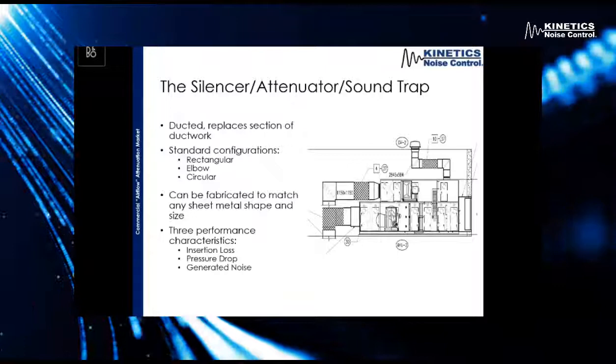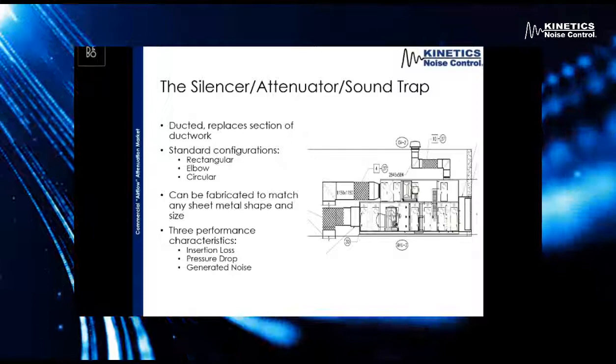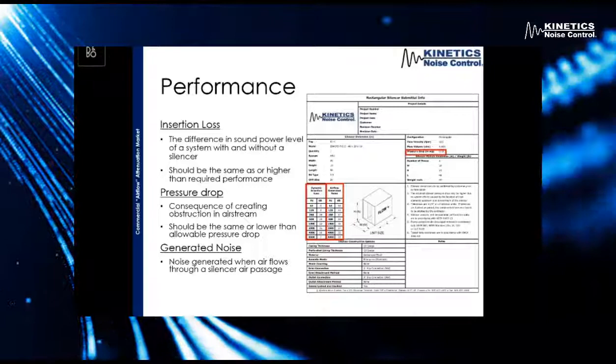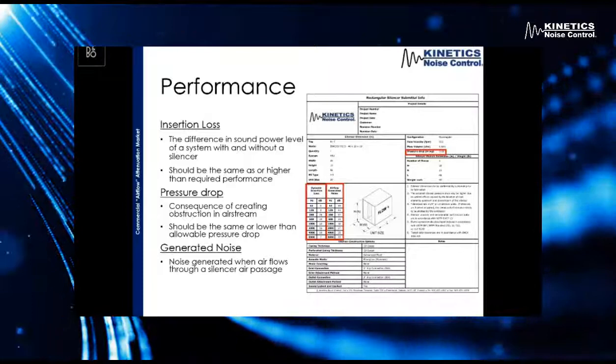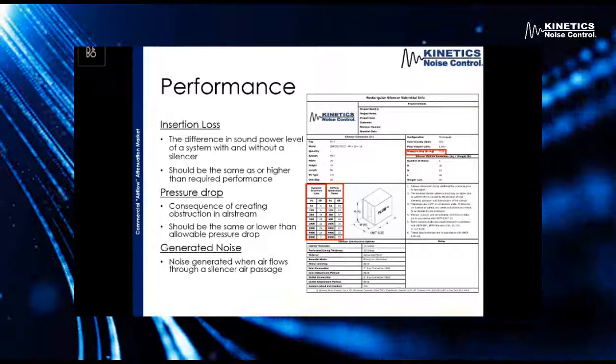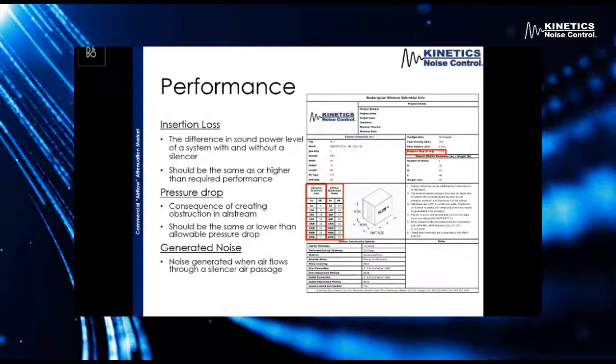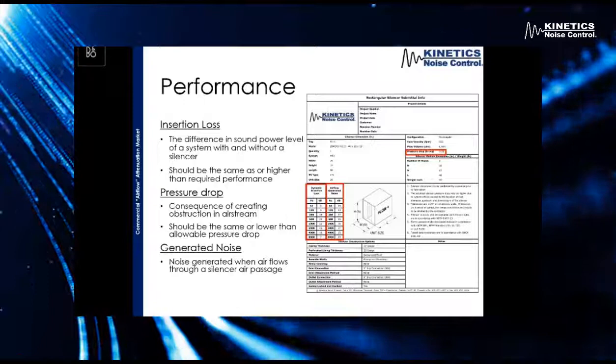The performance of the silencer is characterized in three ways: insertion loss, pressure drop, and generated noise. When I talk about the acoustic performance, I'm talking about the insertion loss of a silencer — this is the difference in sound power levels in a system with and without a silencer. On the right of the screen you can see a standard Kinetics submittal. About halfway down there's a red box that says dynamic insertion loss. You can see eight different frequencies — we work from 63 up to 8,000 Hz — and at each frequency we have an insertion loss number. This is the amount of sound energy at that frequency that's being taken out by the silencer.